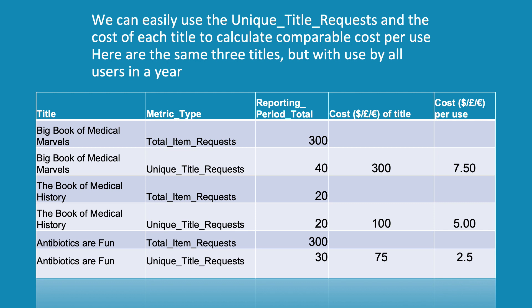Librarians can use the data from the TR B1 report to calculate comparable cost per use. Here is a spreadsheet showing the same three titles with use by all users in a year. The librarian has used the Unique Title Requests metric for the calculation. The Big Book of Medical Marvels has 40 Unique Title Requests and costs £300. The librarian divided 300 by 40 to get a cost per Unique Title Request of £7.50. The same calculation applies whatever unit of currency is used. The Book of Medical History had 20 Unique Title Requests and costs £100. The librarian divided 100 by 20 to get a cost per Unique Title Request of £5.